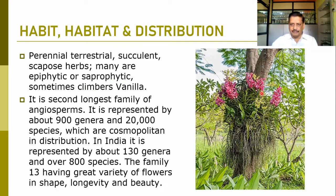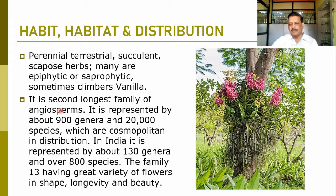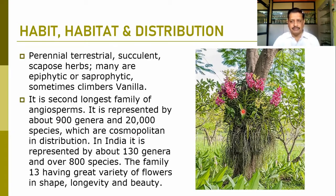Here you can observe how they are attached to plant stems and absorb nutrition from the plants. It is the second largest family of angiosperms, represented by about 20,000 species belonging to 900 genera, which are cosmopolitan in distribution. In India, it is represented by about 130 genera and more than 800 species. Because of its ornamental value, it can be more cultivated for gardening purposes.